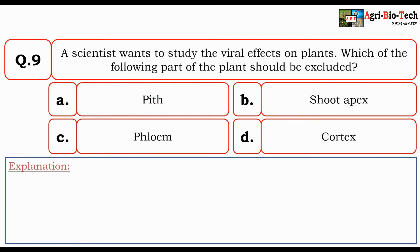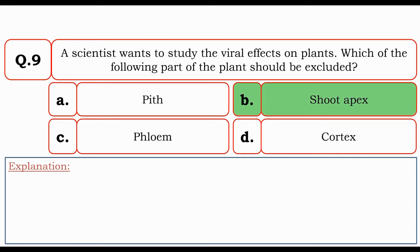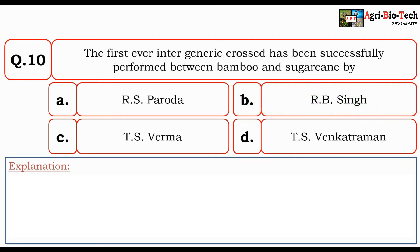Next question: A scientist wants to study the viral effect on plants. Which of the following parts of the plant should be excluded? The given options are Pith, Shoot Apex, Phloem, or Cortex. The correct answer is Shoot Apex.